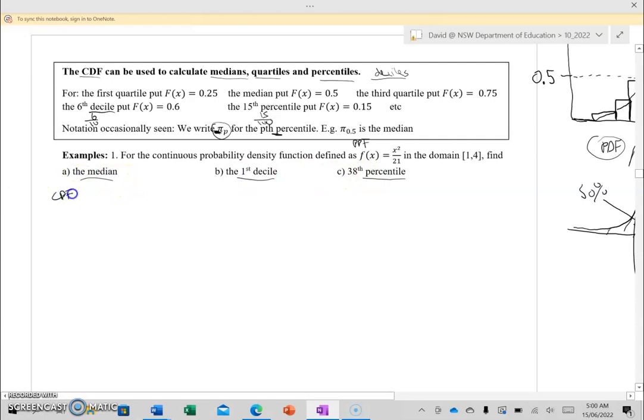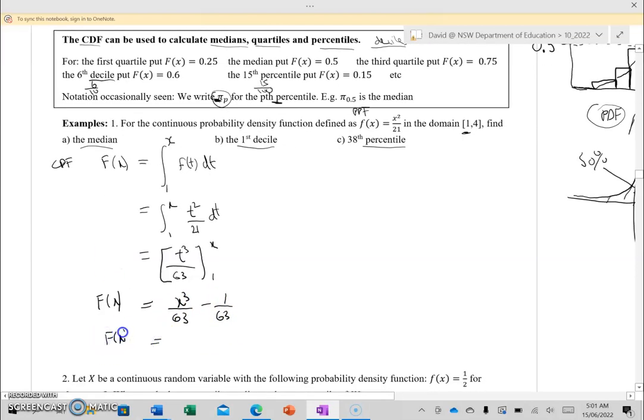The CDF is going to be capital F of X, which will be the integral from the lower limit in the domain, which is 1, to a letter X of the PDF. I like to quickly change the letter, so I'm going to write F of T, dT, just to avoid confusion with the top X. That's going to be T²/21 dT. When we integrate that, it'll be T³—if we divide by 3, that'll be 63—and then X and 1. Substituting in, we get X³/63 minus 1/63, or I'll combine that to get my CDF to be (X³ - 1)/63. Now that I've worked out my CDF, I can work out the three things the question is asking.